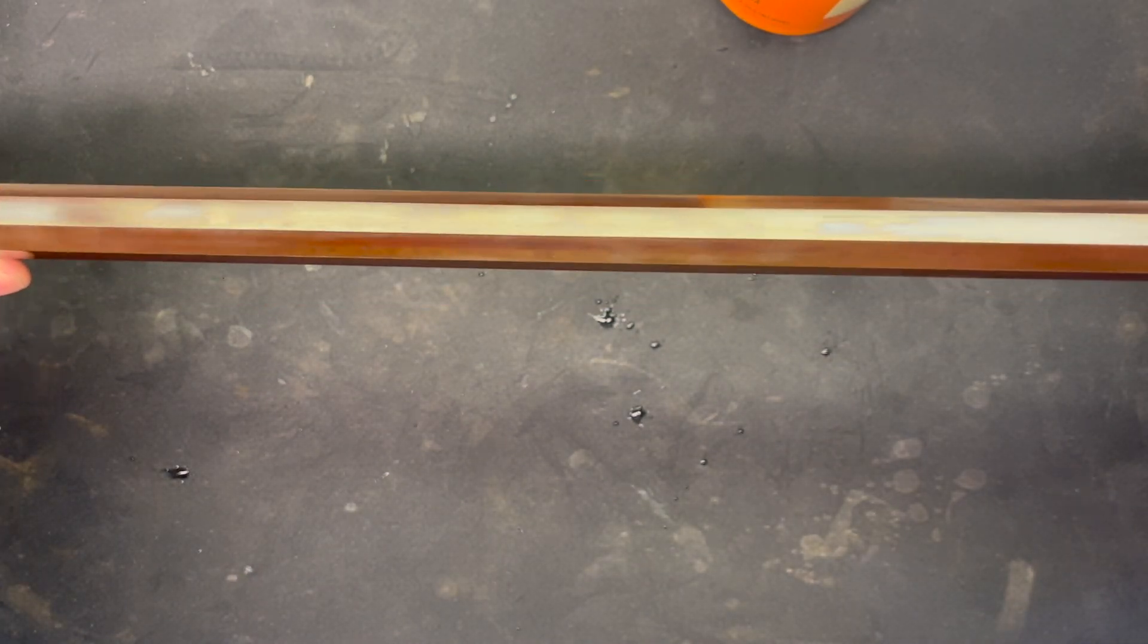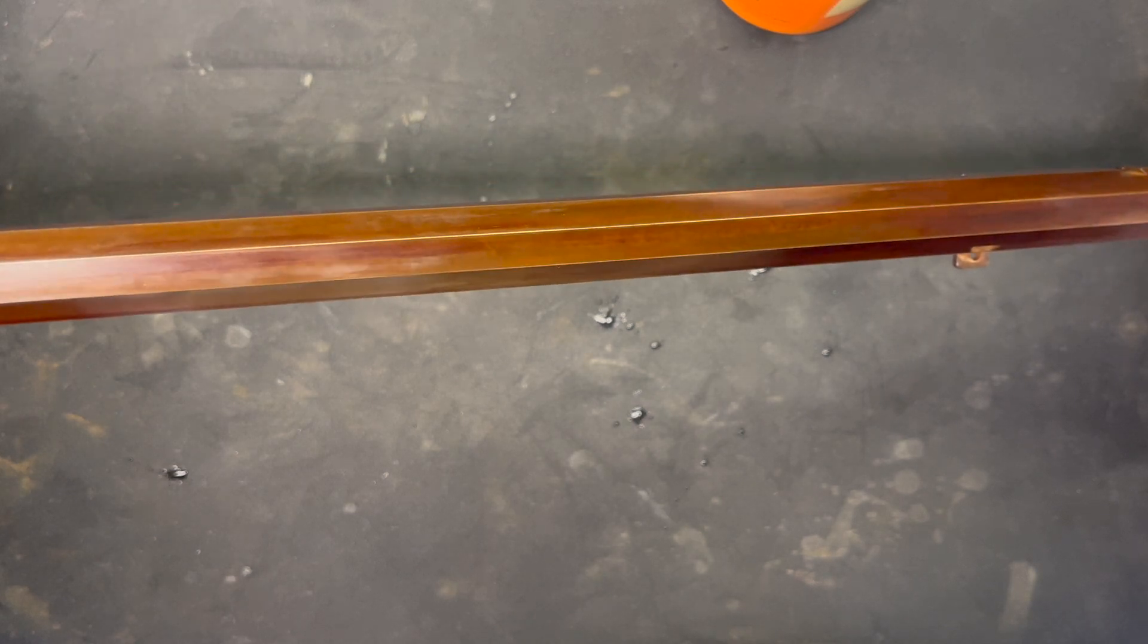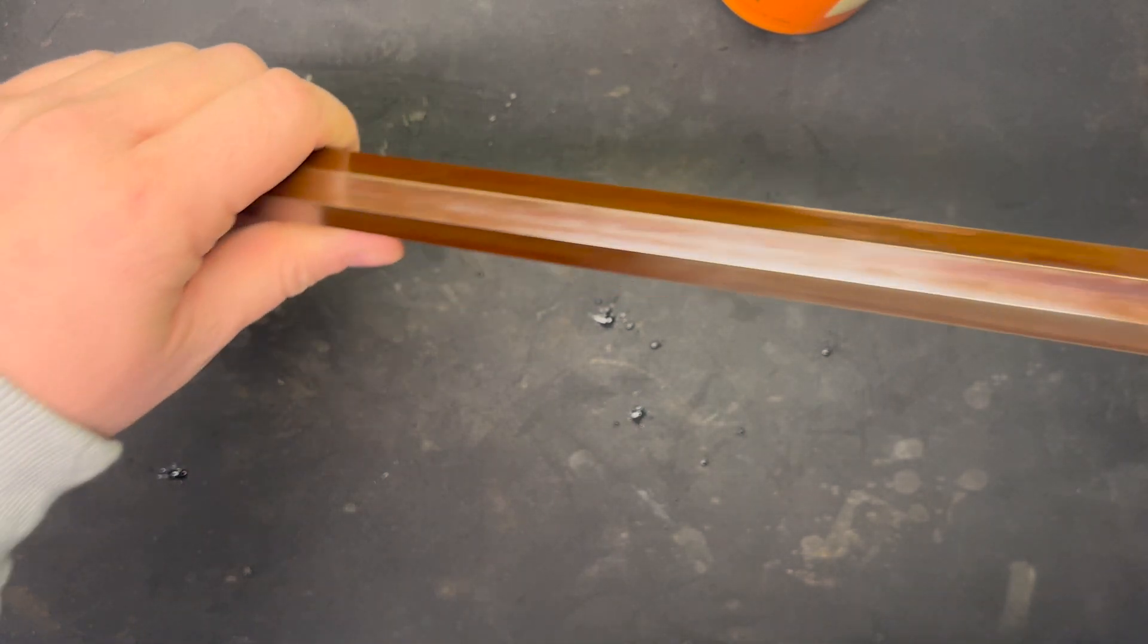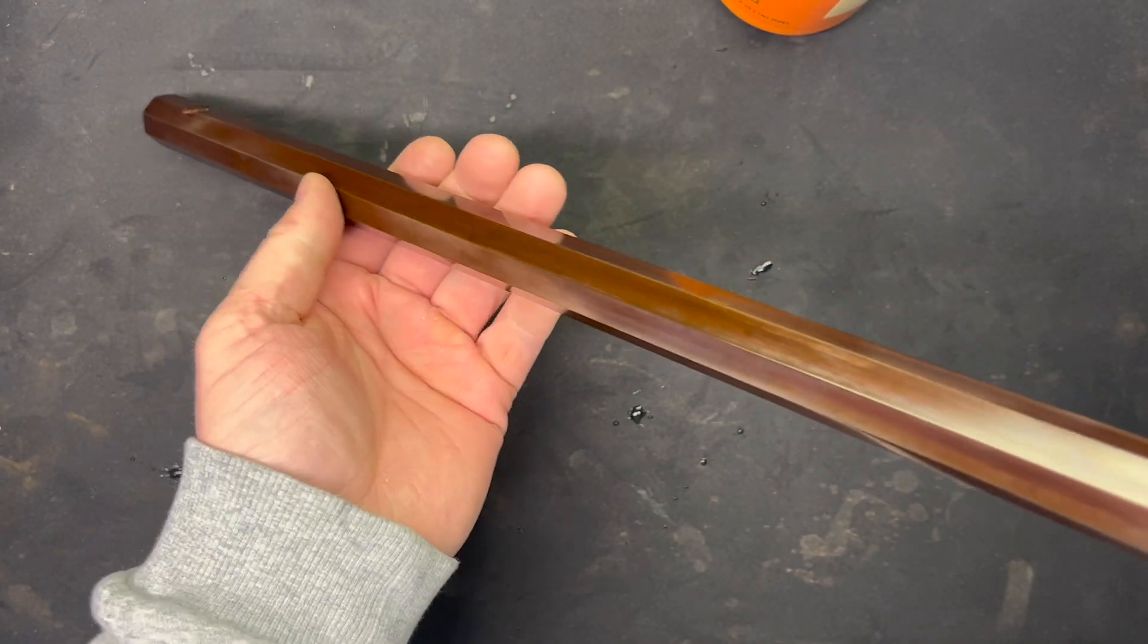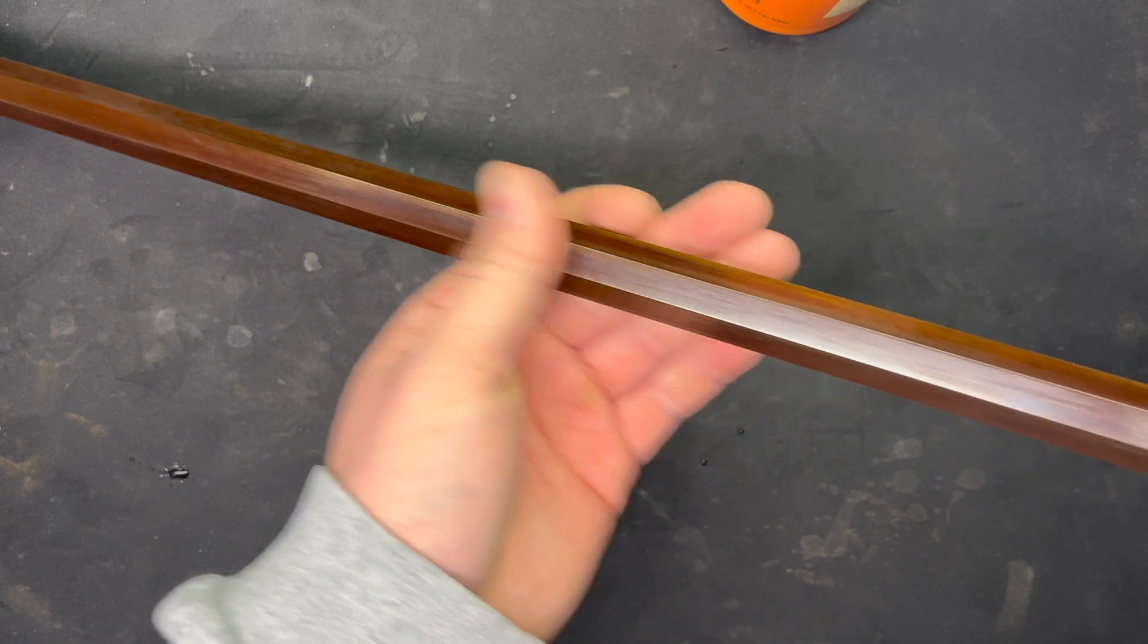I went to a muzzleloader show this weekend and a lot of the barrels had those streaks in them that were browned. It depends on the method you use and what product you use, is what the old timers were telling me. But I'm pretty happy with how it looks here.